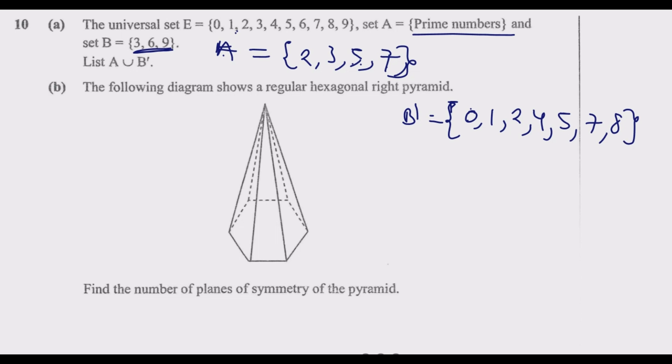B complement contains 0, 1, 2, then 3 is out, then we go to 4, then 5, then 7, then 8. So these are B complement. These are the elements that are not found in set B.